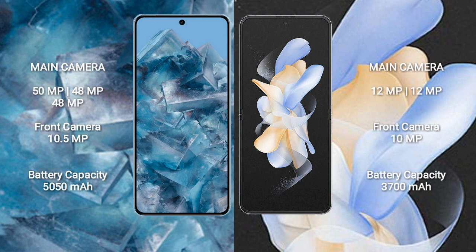Google Pixel 8 Pro has a rear triple camera setup: 50MP plus 48MP plus 48MP, and a front camera of 10.5MP. Samsung Galaxy Z Flip 4 has a rear dual camera setup: 12MP plus 12MP, and a front camera of 10MP.